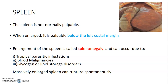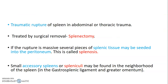The spleen is normally not palpable — it's usually located between the 9th to 11th ribs on the left. When there's enlargement you get splenomegaly and can feel it below the left costal margin. Causes of splenomegaly include tropical parasitic infections like leishmaniasis, blood malignancies, and glycogen and lipid storage diseases. When massively enlarged, the spleen can rupture.